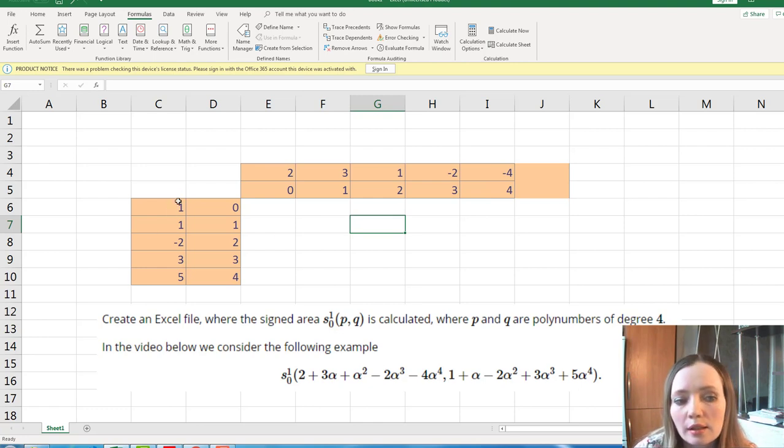And in the first column we enter the coefficients of the second polynomial. This is 1, 1, minus 2, 3, 5. And also we enter the corresponding degrees. 0, 1, 2, 3, 4, 0, 1, 2, 3, 4.